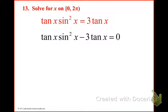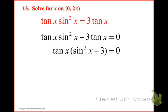So then we would have tangent x times sine squared x minus 3 tangent x equals 0. So now we can factor — they both have that tangent here. So we can factor that tangent out, which leaves us with sine squared x in one term and minus 3 in the other.